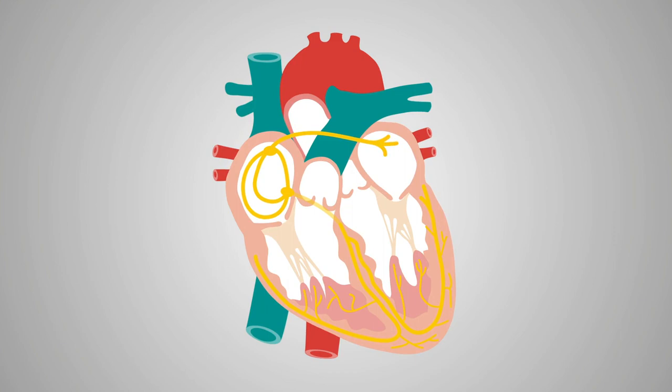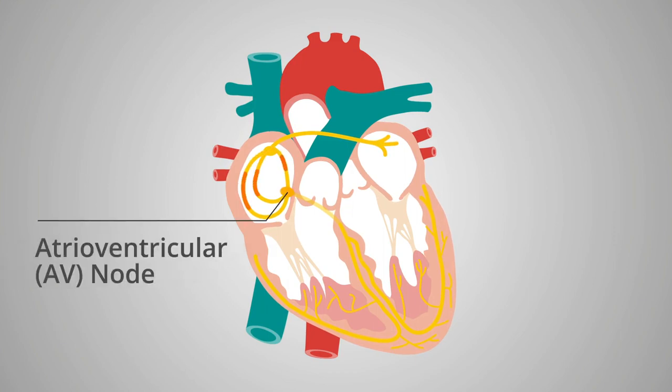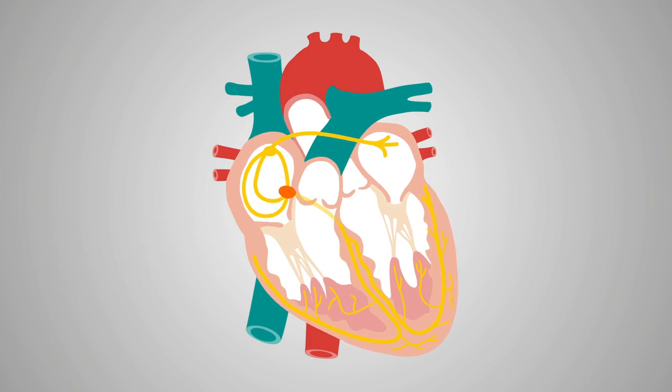Next, the impulse travels to the atrioventricular node or AV node, located in the lower portion of the right atrium. This acts as a gatekeeper for the impulse received from the SA node.